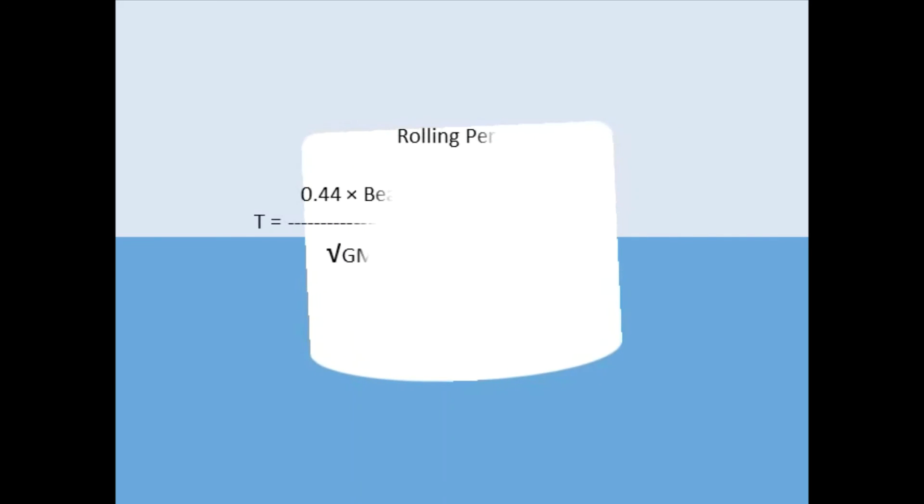Rolling period, or T, is equal to 0.44 multiplied by the beam, and the result is divided by the square root of GM. Note: use 0.44 for feet and 0.497 for meters.